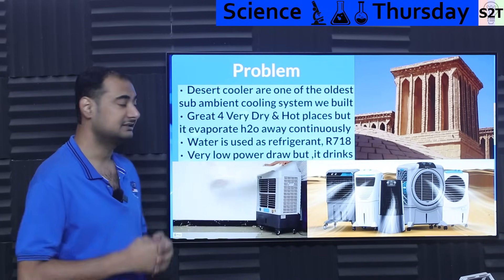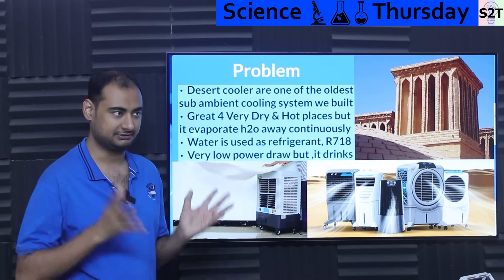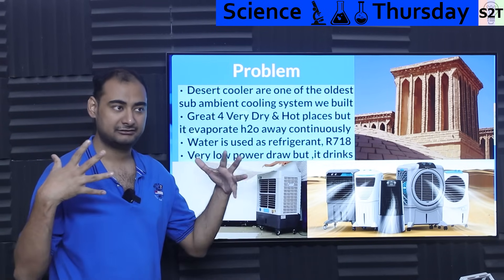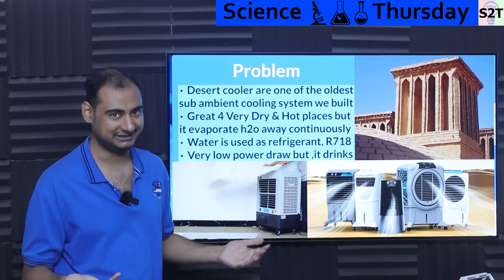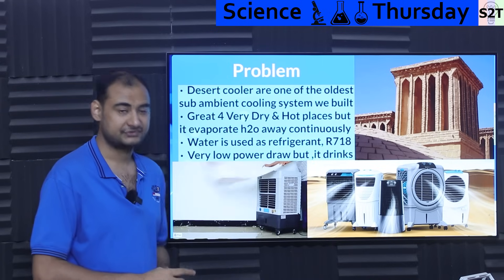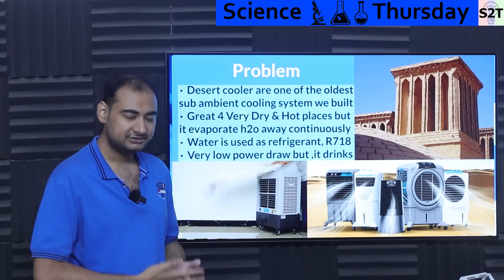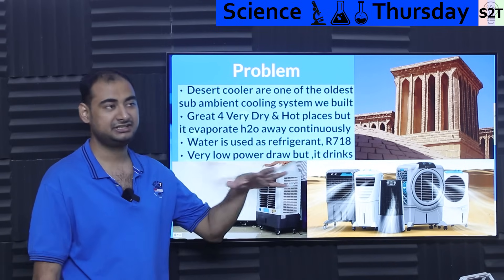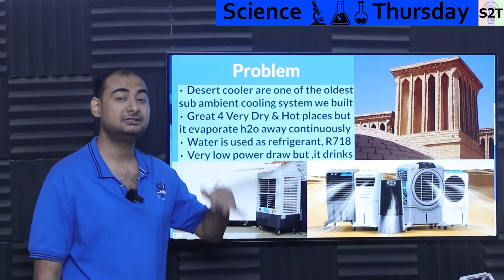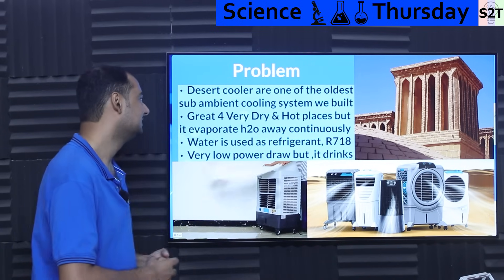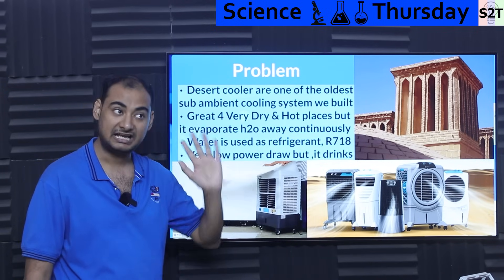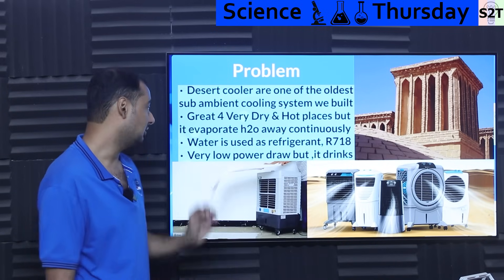So what exactly is the problem here? Desert coolers are basically one of the oldest — it's not even fair to say old, it's ancient technology — of achieving what we call sub-ambient cooling. A fan will just move air around; it can't cool it. But desert coolers, swamp coolers, or evaporative coolers were the first devices that allowed us to go below ambient temperature.